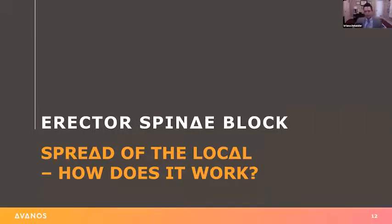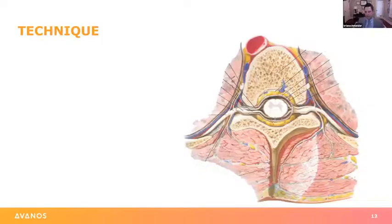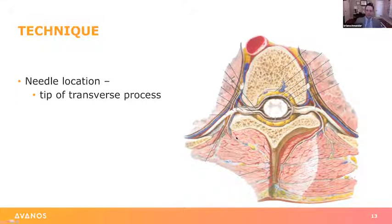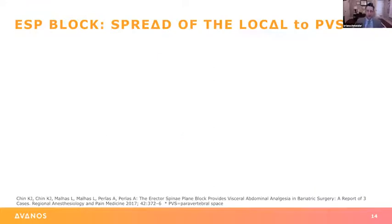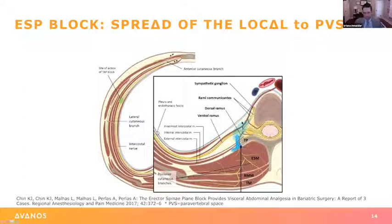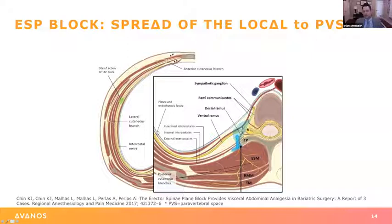The big question is how does the local spread and how does it work? It's pretty clear that the local anesthetic spreads down the erector spinae plane itself, helping to catch the dorsal rami — essentially getting the muscles in the back and the skin covering the back. What's really important is that the local anesthetic tracks itself into the perivertebral space. So essentially by doing an erector spinae plane block, you are getting a perivertebral block.